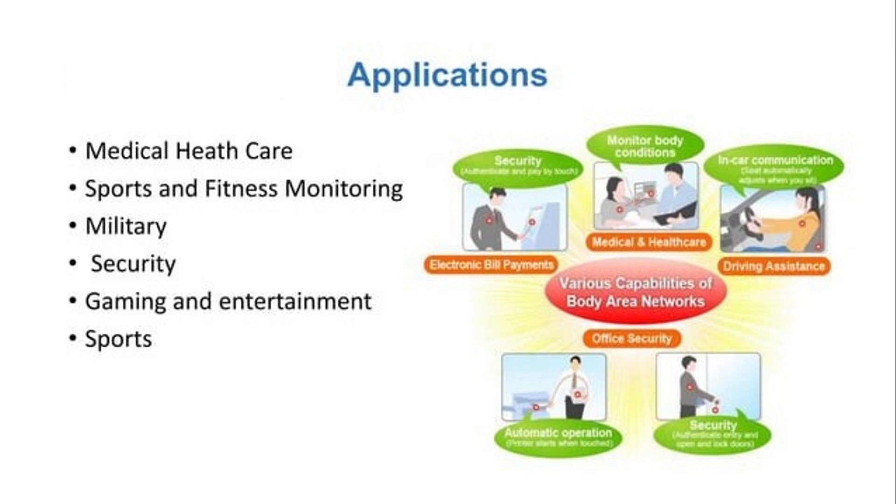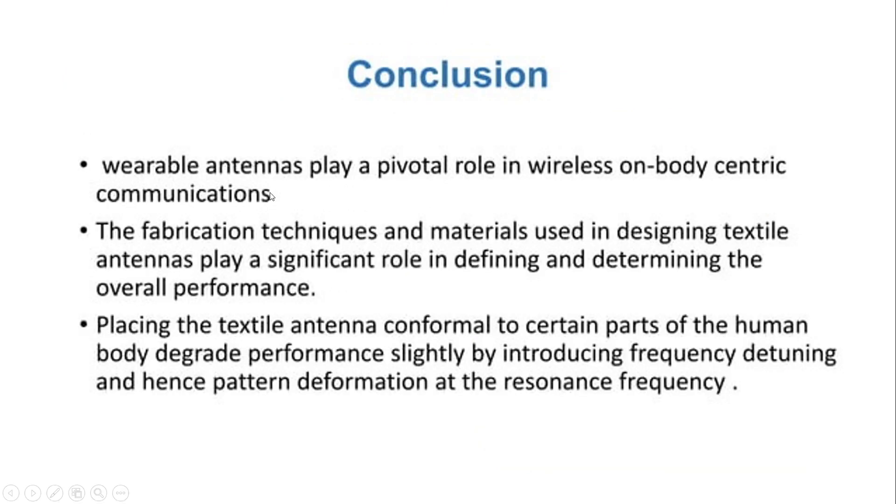These are the major applications of the wearable textile antenna. It can be used in medical, healthcare, sports and fitness monitoring, military, security, gaming and entertainment and also sports. When it comes to conclusion, wearable antennas play a pivotal role in wireless on-body-centric communications. The fabrication techniques and material used in designing textile antennas play a significant role in defining and determining the overall performance. Placing the textile antenna conformal to certain parts of the human body degrade the performance slightly by introducing frequency detuning and hence the pattern deformation at the resonance frequency.